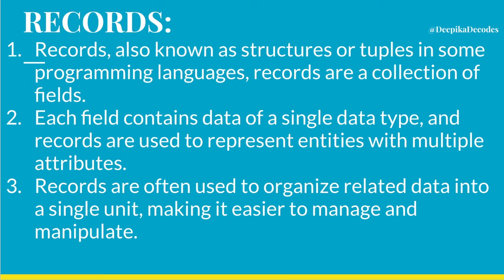The next data structure type is Record. Records, also known as structures or tuples in some programming languages, are a collection of fields. Each field contains data of a single data type, and records are used to represent entities with multiple attributes. Records are often used to organize related data into a single unit, making it easier to manage and manipulate.